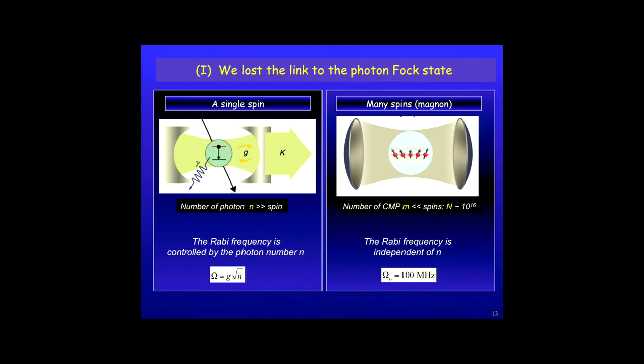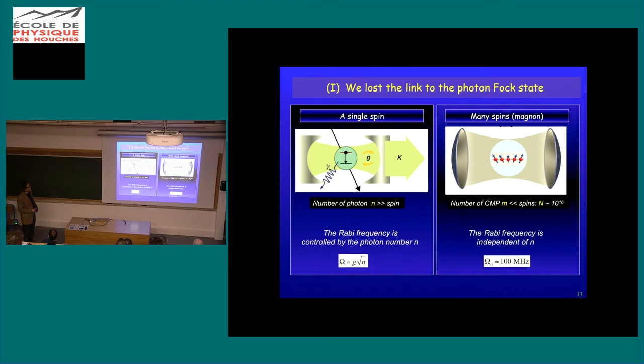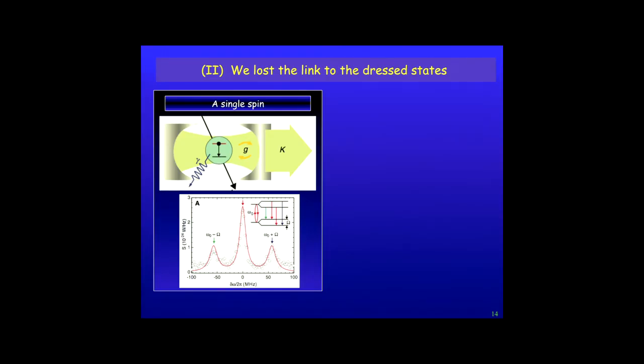In the many spin systems, the number of the polariton is much smaller than the total number of the spin. So the system is far from saturated. And in this case, if you're adding additional photons to that system, your Rabi frequency is not changing at all. The only thing you're changing is you're going to produce a little bit more cavity magnum polariton. And experimentally, I don't show you this data, but you believe me that this Rabi frequency is essentially totally independent of the microwave power you apply. So we lost this capability in the many-body system.